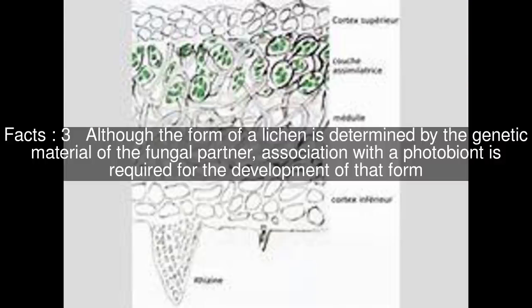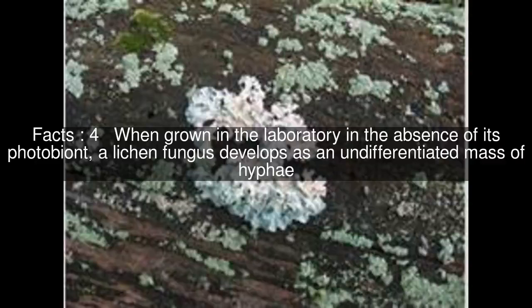Although the form of a lichen is determined by the genetic material of the fungal partner, association with a photobiont is required for the development of that form. When grown in the laboratory in the absence of its photobiont, a lichen fungus develops as an undifferentiated mass of hyphae.